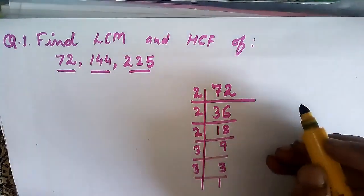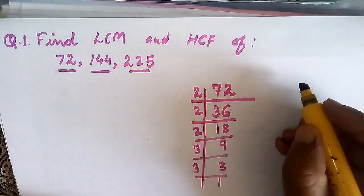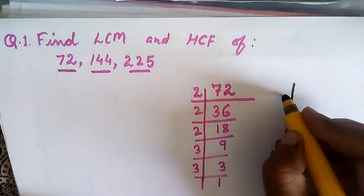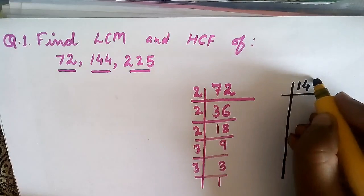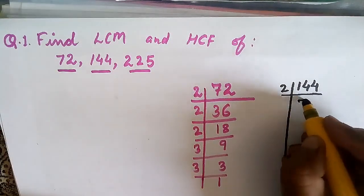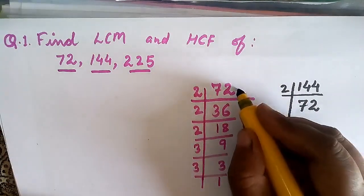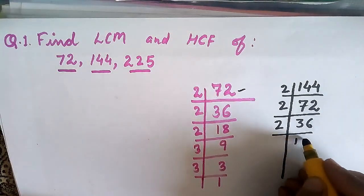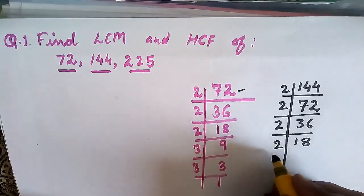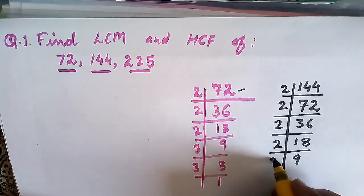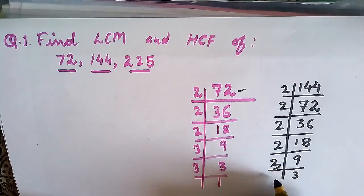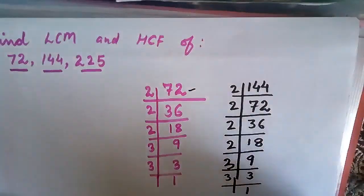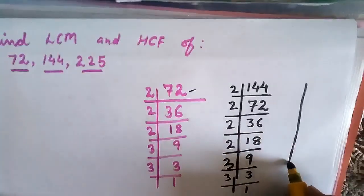Now let us factorize 144. Factors of 144: divide by 2 to get 72, then the same as 72 — by 2 to get 36, by 2 to get 18, by 2 to get 9, by 3 to get 3, by 3 to get 1. Same for 225: factors of 225 — divide by 3 first.